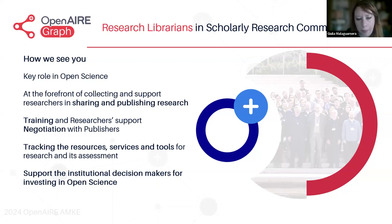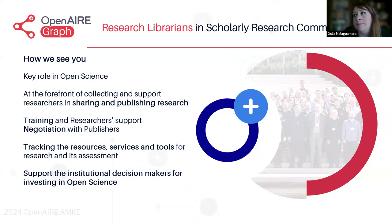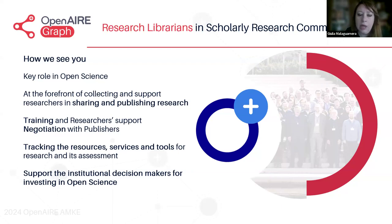In this way, you can support decision makers at the institutional level in how to invest in open science. For instance, if you see that during a year you spent a lot of money on article processing charges, you may discuss novel Diamond Open Access journals, or the possibility of having more support in the creation of journals, or allocating more hours to training early career researchers to explain alternative publishing models, or to support archiving in open access, green repositories and so on.